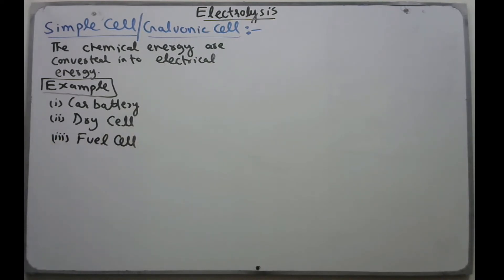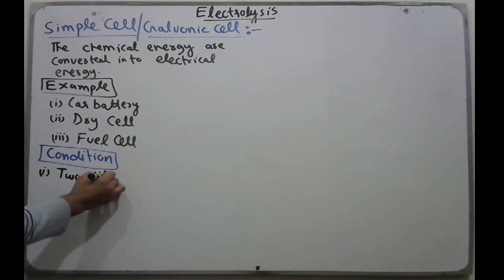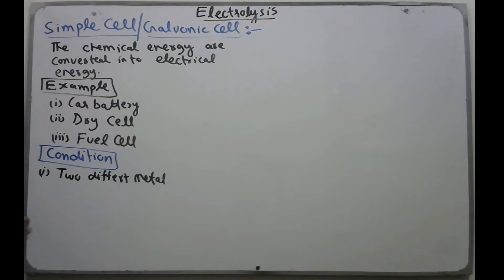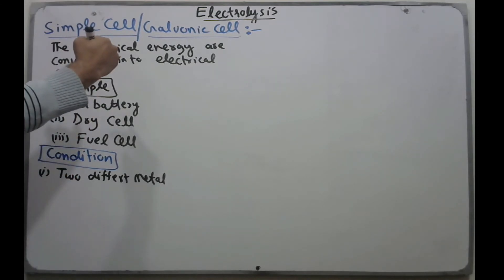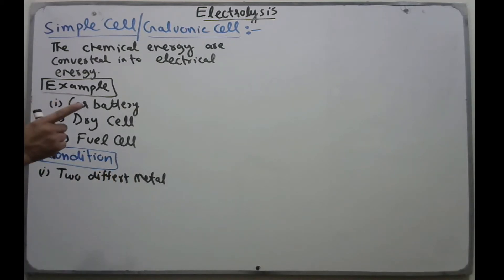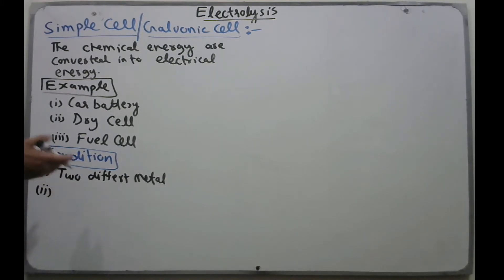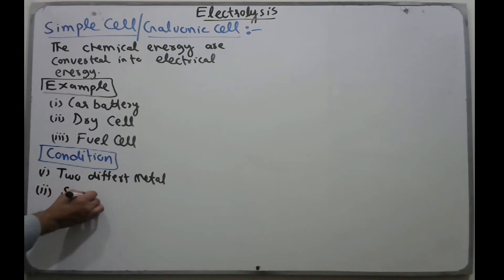The conditions for simple cells: first, we take two different metals. For example, zinc is higher in the reactivity series and copper is lower. We take two different metals and dip them in the same electrolyte.